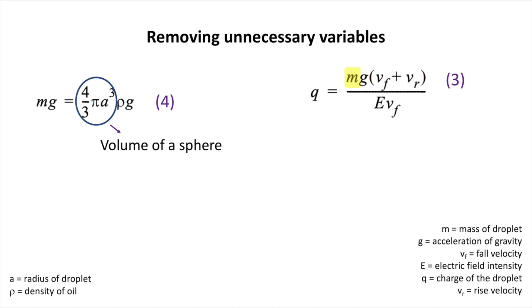In here, a is the radius of the droplet and rho is the density of the oil. Substituting 4 to 3, we get our new equation 5.